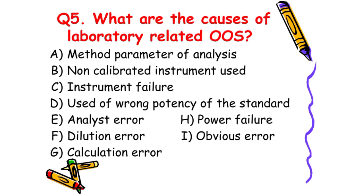Next: What are the causes of laboratory-related OOS? The answer is: laboratory-related OOS happens due to the following reasons — due to the method parameter of analysis, due to non-calibrated instrument used, due to instrument failure, due to the use of wrong potency of the standard, due to analyst error, due to dilution error, due to calculation error, due to power failure, and due to some obvious error.